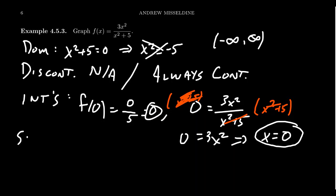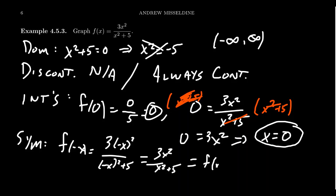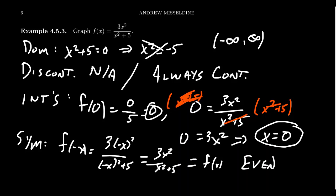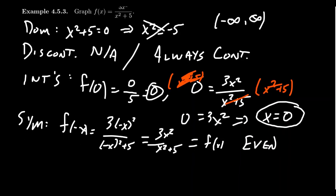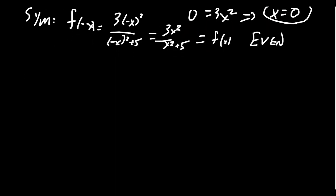If we looked at symmetry, f of negative x, this will equal 3 times negative x squared over negative x squared plus 5. If you take a square of a negative number, it becomes positive. So, you get 3x squared over x squared plus 5. That's equal to f of x again. This function is even. It's symmetric with respect to the y-axis. If you skip this step, it's not a horrible thing, but it is an even function. Let's use that to our advantage.